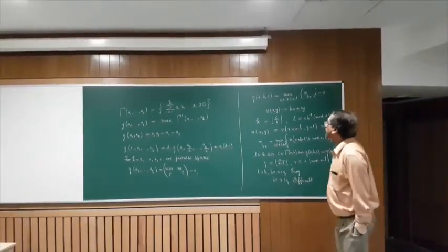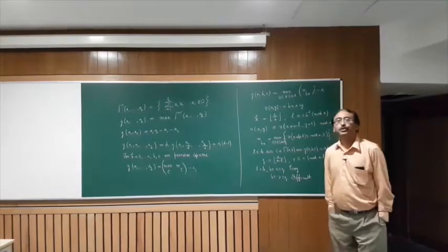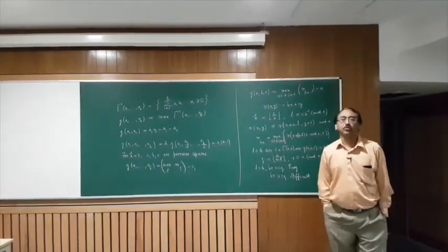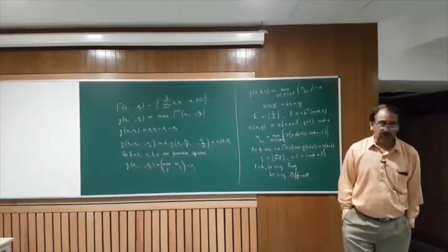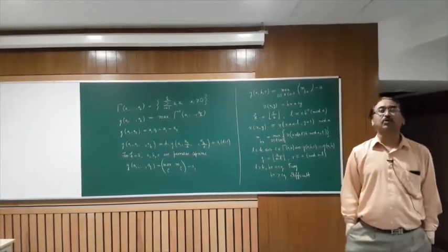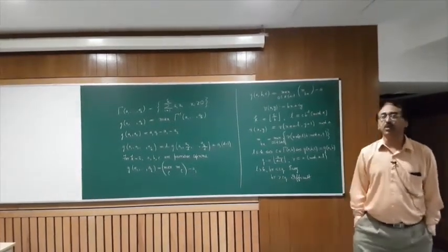To compute mbx it is convenient to use the notation v of xy is bx plus cy and introduce the two variables k and l, where k is the floor of c by b and l is cb inverse mod a.